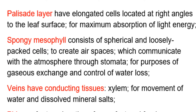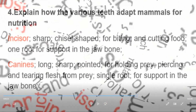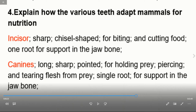Our next question asks you to explain how the various teeth of mammals are adapted to their functions. Number one, incisors: they are sharp and chisel-shaped for biting and cutting food. They have one root for support in the jaw bone.